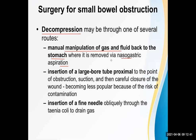Another method of decompression is insertion of a large-bore tube proximal to the obstruction, suctioning through it, then carefully closing the wound. This is now less popular due to the risk of peritoneal contamination. A third method is insertion of a fine needle obliquely through the taenia coli to drain the gas.